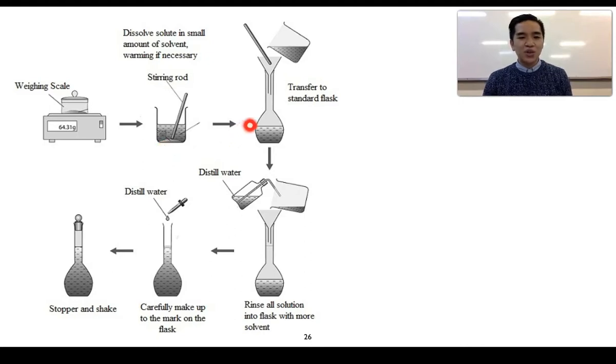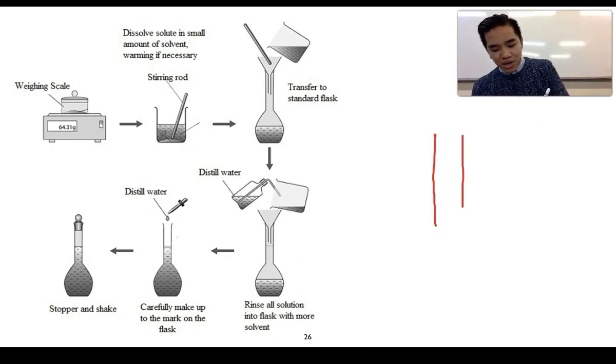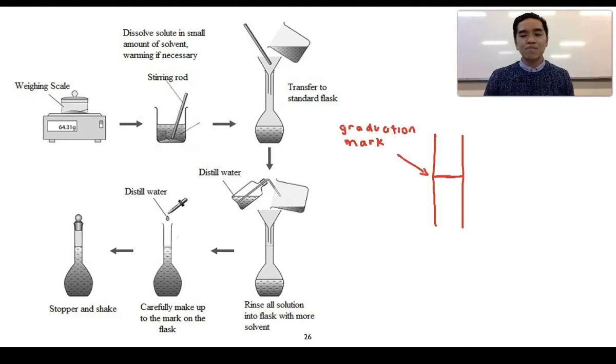Following from that, we want to transfer it into our glassware which is what we call a volumetric flask. On the neck, we can see that there's a marking and it indicates as long as we measure our solution up to that mark, it will guarantee that we have a specific volume of solution. This is called our graduation mark or sometimes it's called our calibration mark.